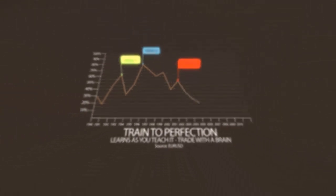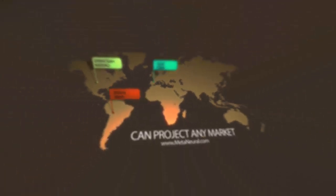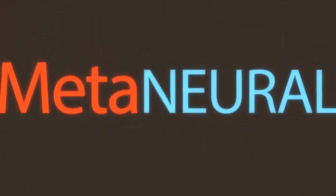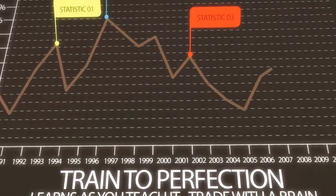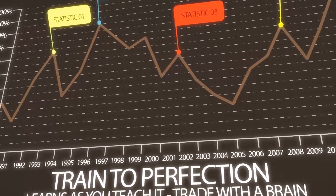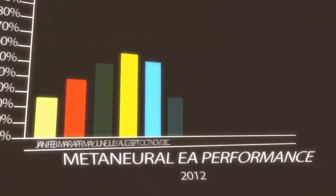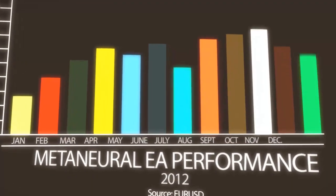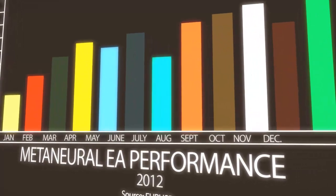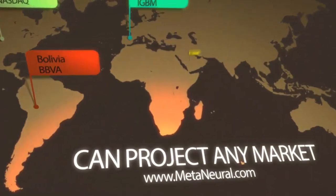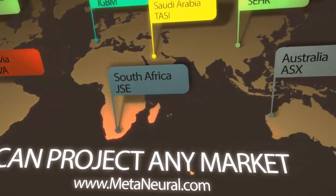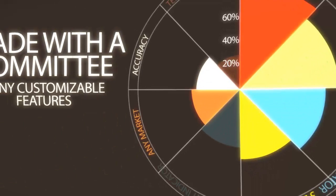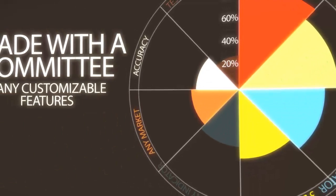Imagine an expert advisor that actually advises — an indicator that tells you what comes next, not what has already passed. At Metaneural, we don't have to imagine, and neither do you. For years, neural network technology has been used by the most successful hedge fund managers and trading firms in the world. Now, the ability to use your personal computer to detect and trade complex patterns in the markets has never been easier.